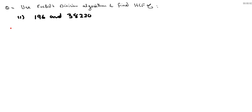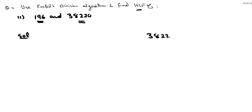Hello dear students, again we have a question: use Euclid's Division Algorithm to find the HCF of 196 and 38220. We need to use Euclid's Division Algorithm to find the highest common factor of these two numbers. The larger number is 38220 and the smaller number is 196. We will do rough work — that is, we divide 38220 by 196.